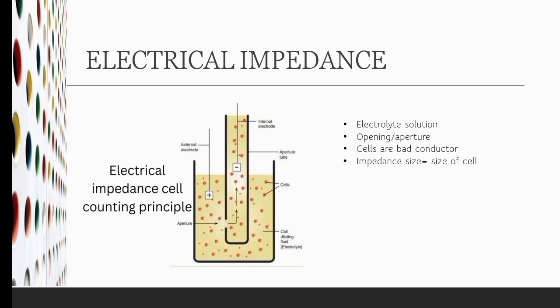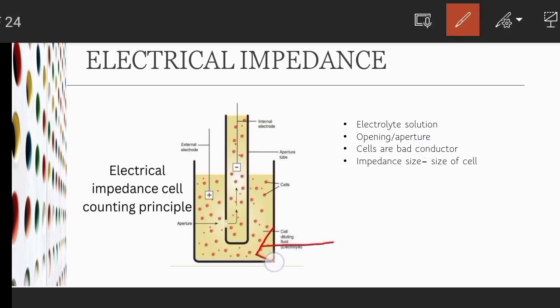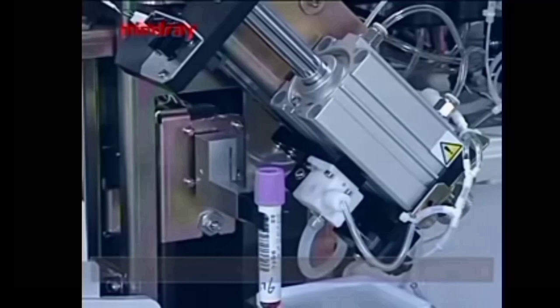First let's learn the electrical impedance. There is an electrolyte solution which conducts electricity, and in this solution the blood cells are diluted. The electrical current is passing through the opening in the electrolyte solution from one electrode to another. Blood cells are bad conductors of electricity, so whenever the blood cell passes through an aperture or opening, it disrupts the electrical current. This impedance is proportional to the size of the cell. One by one, the machine counts the number as well as the size of all cells. This is called the electrical impedance.